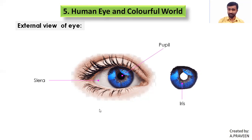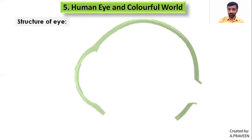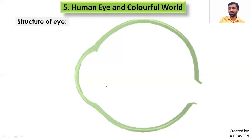We are unable to see any internal parts externally. To see the internal structure, we take transverse or longitudinal sections — as studied in biology. The outline of the eyeball has a front portion that protrudes outward. From the outside, the first part we can reach is a transparent protective membrane present on the eyeball, called the cornea.